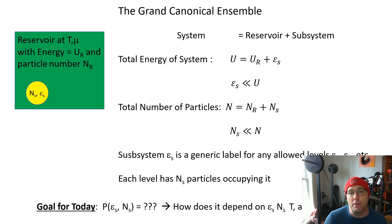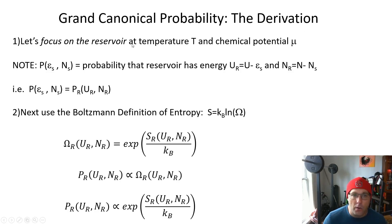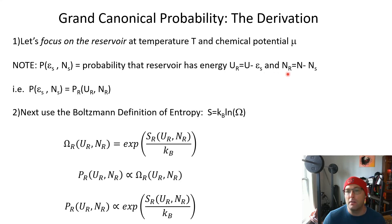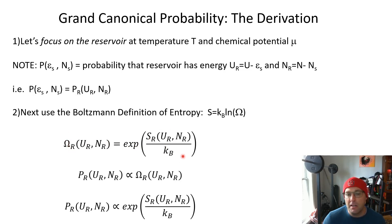We focus on the reservoir and note that the probability of E_s and n_s equals the probability that the reservoir has a corresponding U_r and N_r, connected by the conservation sums. We apply the Boltzmann definition of entropy: the multiplicity of the reservoir is e to the entropy of the reservoir over k_B. The probability that the reservoir has those macroscopic energy and particle number values is proportional to that multiplicity.